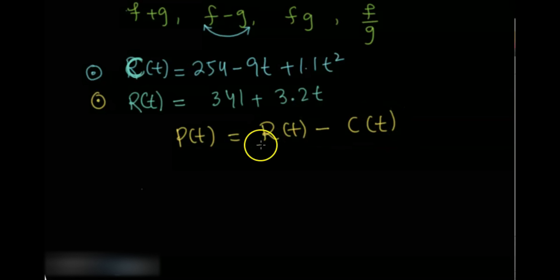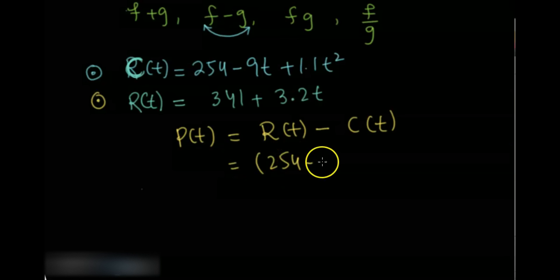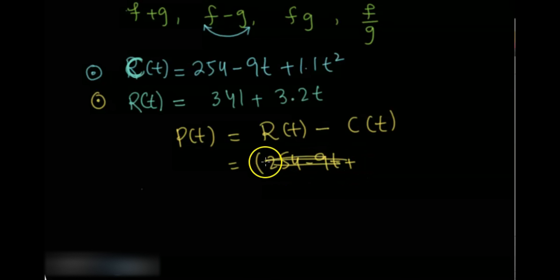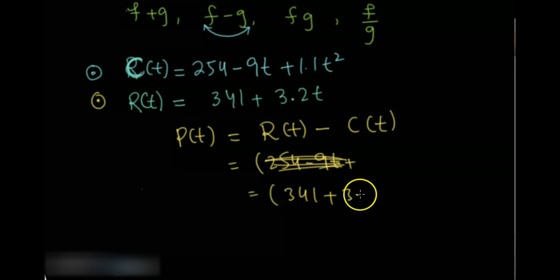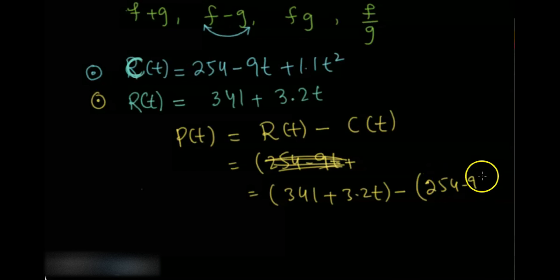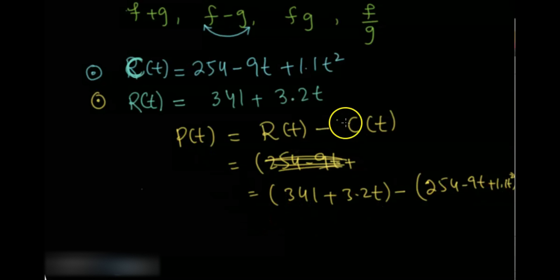So the revenue is 341 plus 3.2t, minus the cost 254 minus 9t plus 1.1t squared. Once you simplify, you will get the profit. This is an application of the difference of two functions.